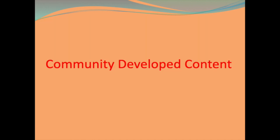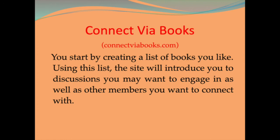Community Developed Content. Connect via Books: you start by creating a list of books you like. Using this list, the site will introduce you to discussions you may want to engage in, as well as other members you may want to connect with. Because the system understands that books are related in different ways, it can connect you to discussions that may be of interest to you even if the books discussed are not exactly the same as the ones you have on your book list. The same goes for connecting you with other members — the system can introduce you to others who share your interest even if you haven't read any of the same books.